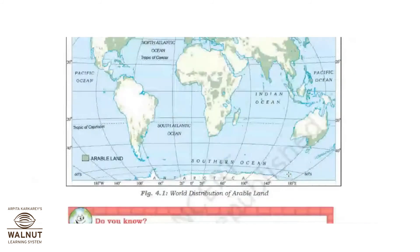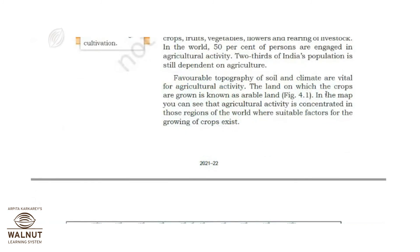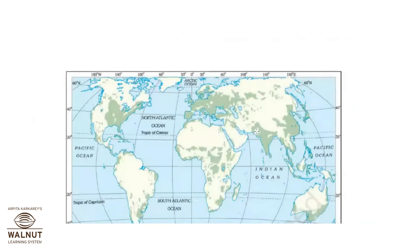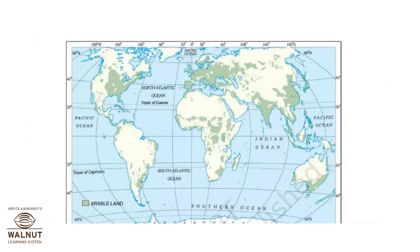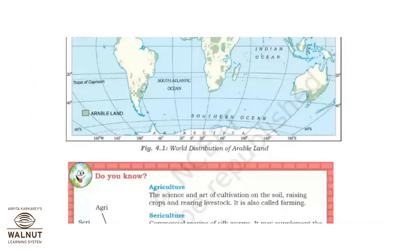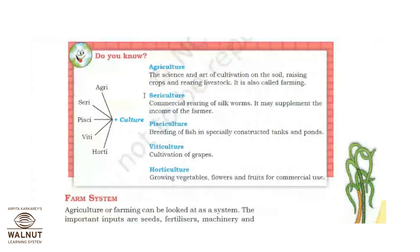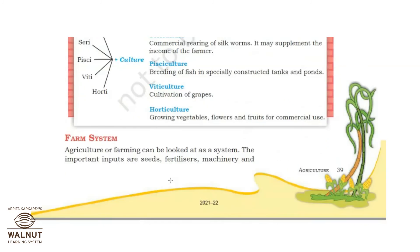Now I will show the world distribution of arable lands. Arable land means the land on which crops are grown — the land suitable for cultivation. You can see on the world map which areas are considered suitable land for cultivation — that is arable land — shown in green color. We will also look at a table related to agriculture, sericulture, pisciculture, viticulture, and horticulture in the next part.